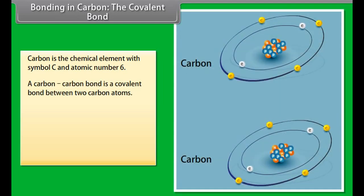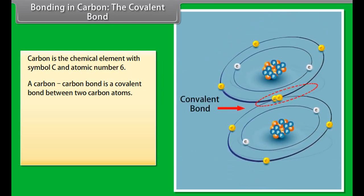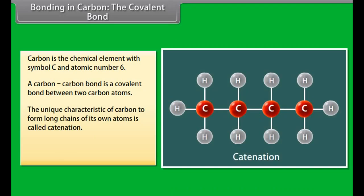A carbon-carbon bond is a covalent bond between two carbon atoms. The most common form is the single bond, a bond composed of two electrons, one from each of the two atoms. Carbon also has the unique characteristic to form long chains of its own atoms. This property is called catenation.